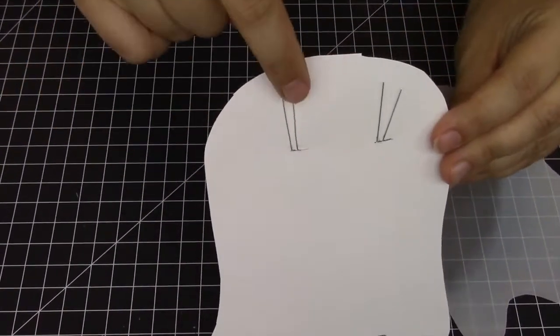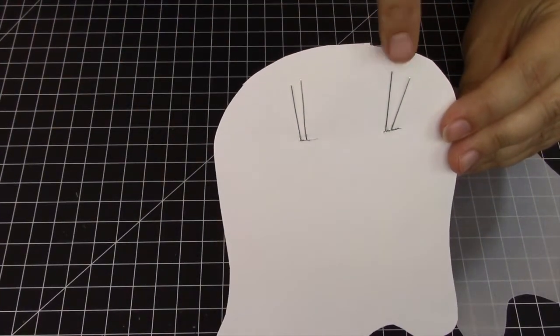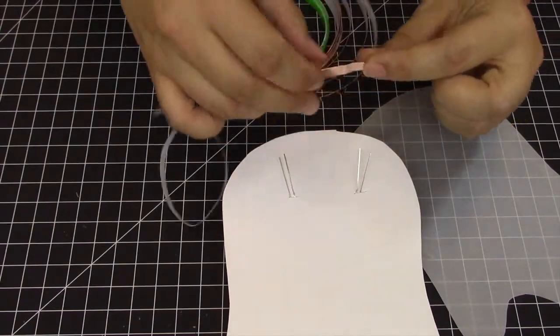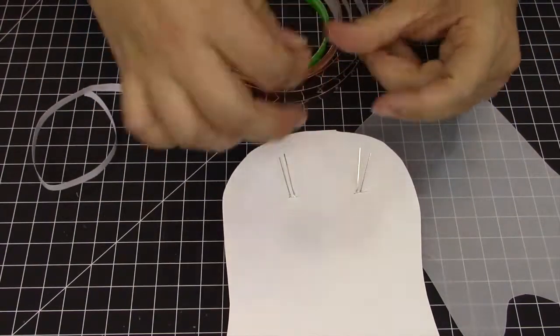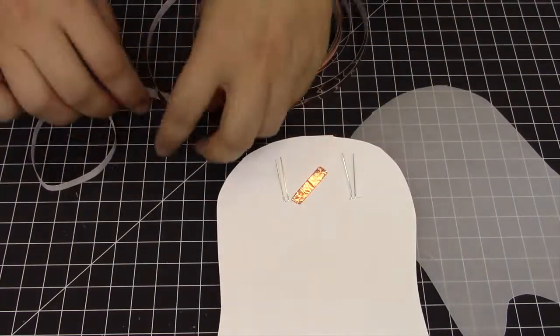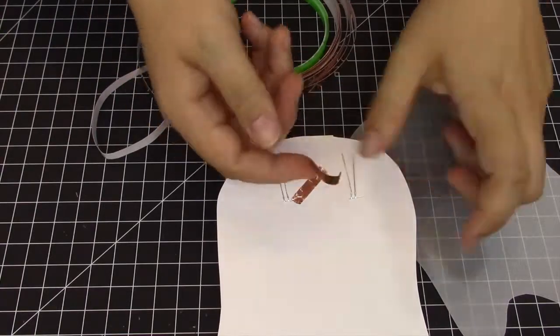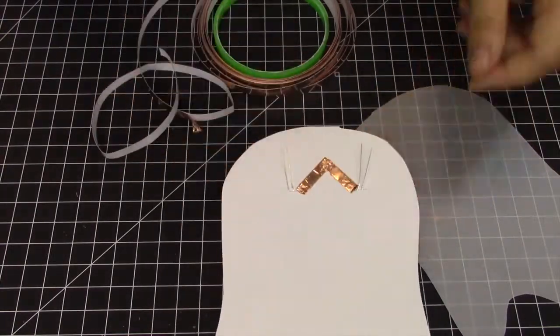Next, flip over your ghost and notice that one LED leg is longer than the other. These are the ones that we will tape to our conductive tape. Take a strip of copper conductive tape and place it diagonally towards the center of your ghost. Put another one for the other eye of your ghost.